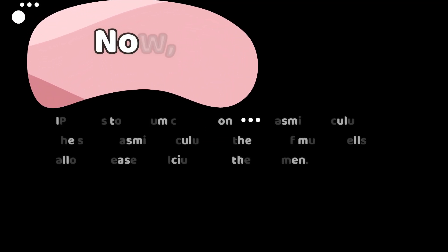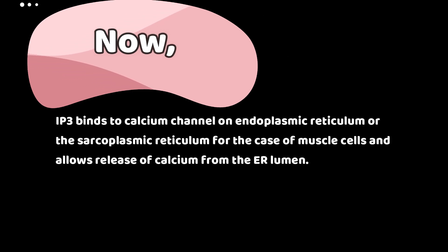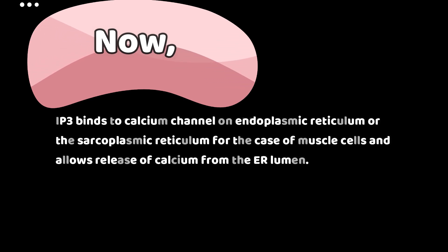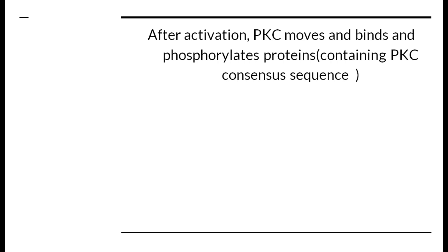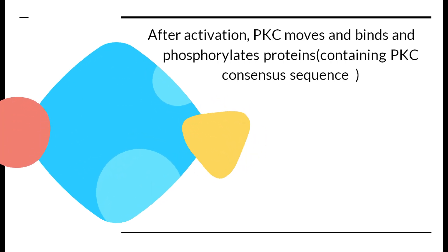IP3 binds to calcium channels on the endoplasmic reticulum, or for muscles, the sarcoplasmic reticulum. This in turn allows the release of calcium ions from the lumen. DAG, with the help of this calcium release from the ER, activates calcium-dependent protein kinase, PKC. This PKC then binds and phosphorylates proteins, which helps the proteins to function the way they are supposed to.